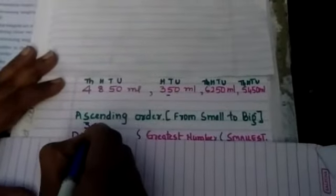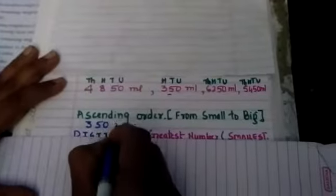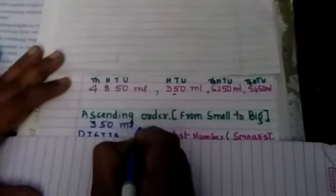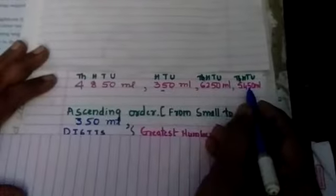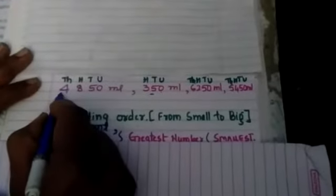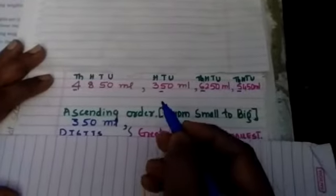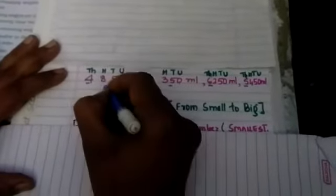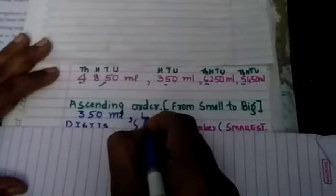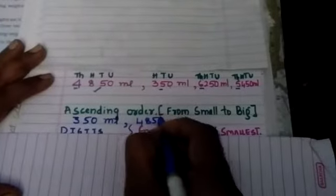Common, leave this one. Now you compare here in between these three numbers: four, six, five. Which is smaller? Four. So we'll take this one: 4,850 milliliters.